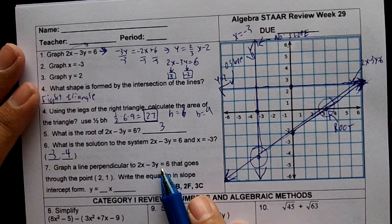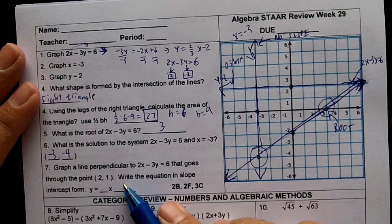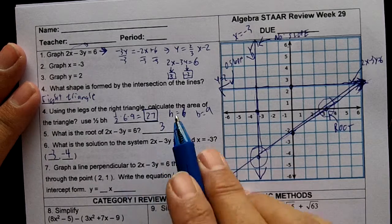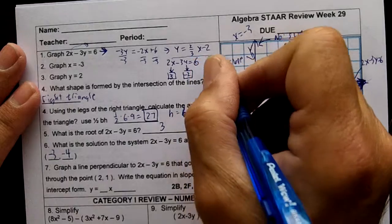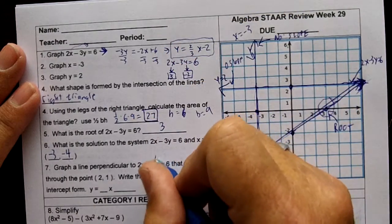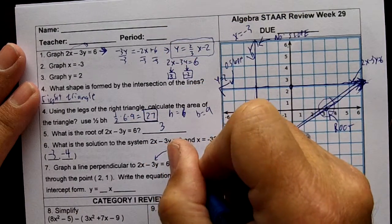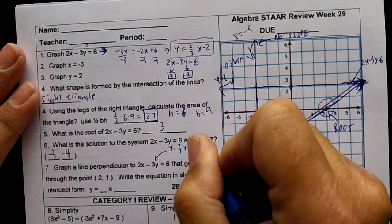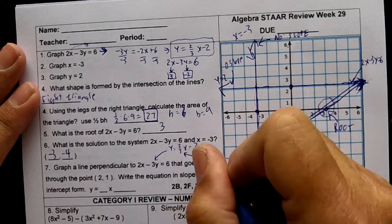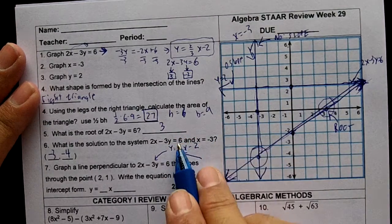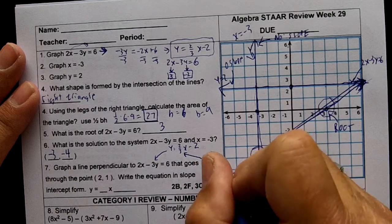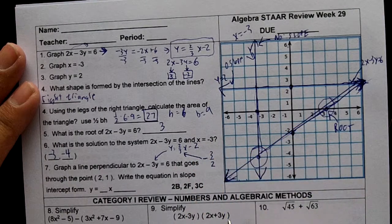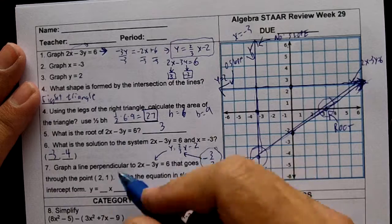Graph a line perpendicular to 2x minus 3y equals 6 that goes through the point (2, 1). This line right here is y equals 2 over 3x minus 2. To make it perpendicular we're going to get the opposite reciprocal of that slope, which would make it negative 3 over 2. So we're going to use this as our slope and we're going to start at 2 comma 1.